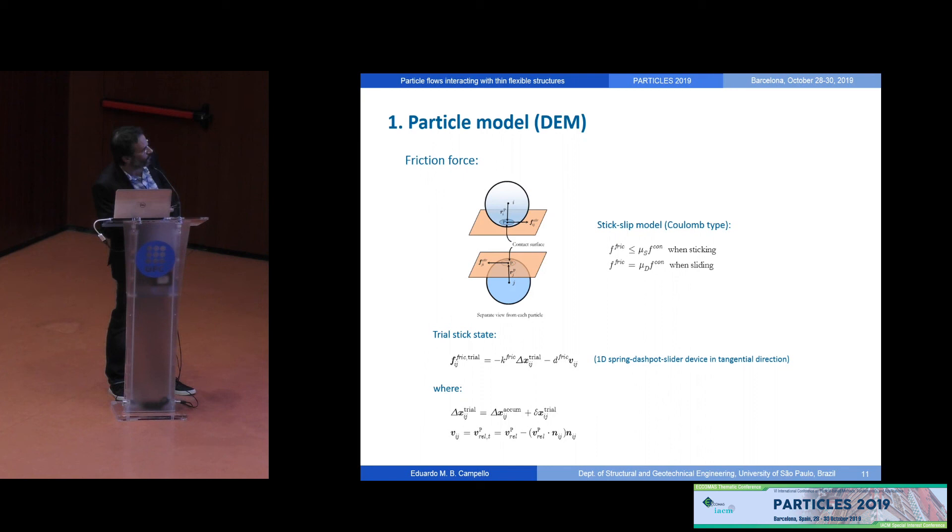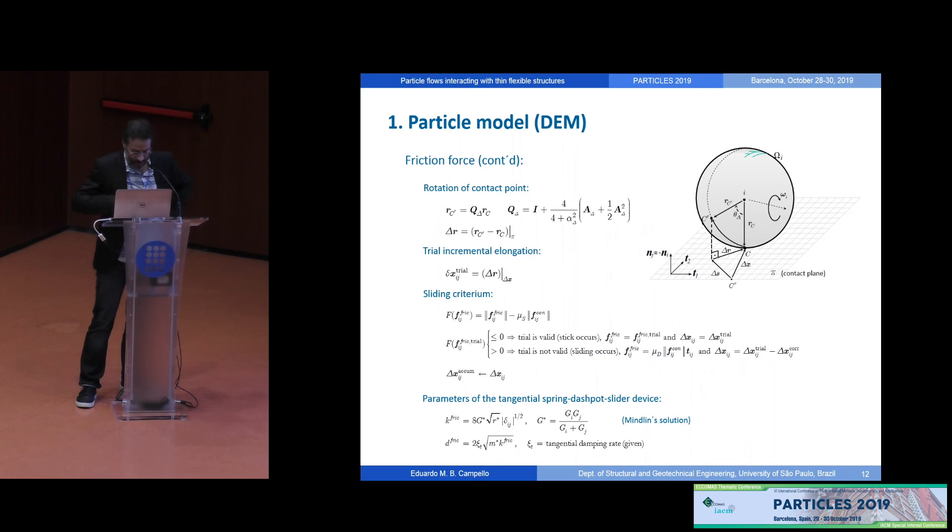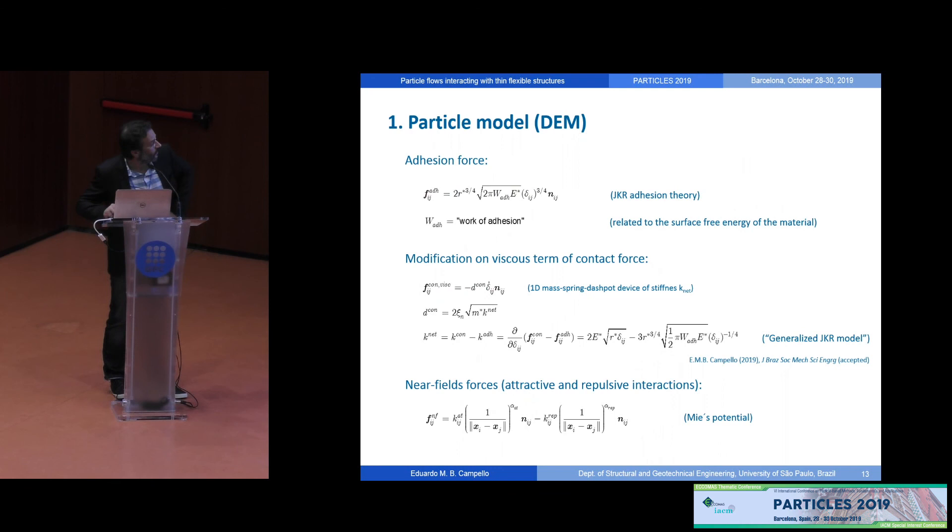For the friction force, we use a consistent stick-slip model of Coulomb type. That is to say, we invoke the concept of a trial stick state, assuming that first the particle will stick to the other particle or an object, if it's in contact. And this sticking force is given by a one-dimensional spring dashpot slider device in the tangential direction, the stiffness of which is given through a special scheme here. We compute the rolling distance of the particle by means of the rotation of its radial vector, as shown here, between successive configurations. And by this rolling distance, we may subtract it from the total translation of the particle. And this rolling distance, we project it onto the contact plane. And this is what the amount of rolling that fires the spring in the tangential direction. So we verify this trial friction force against the static friction limit in standard way in case it violates the sliding criterion then their slipping occurs.